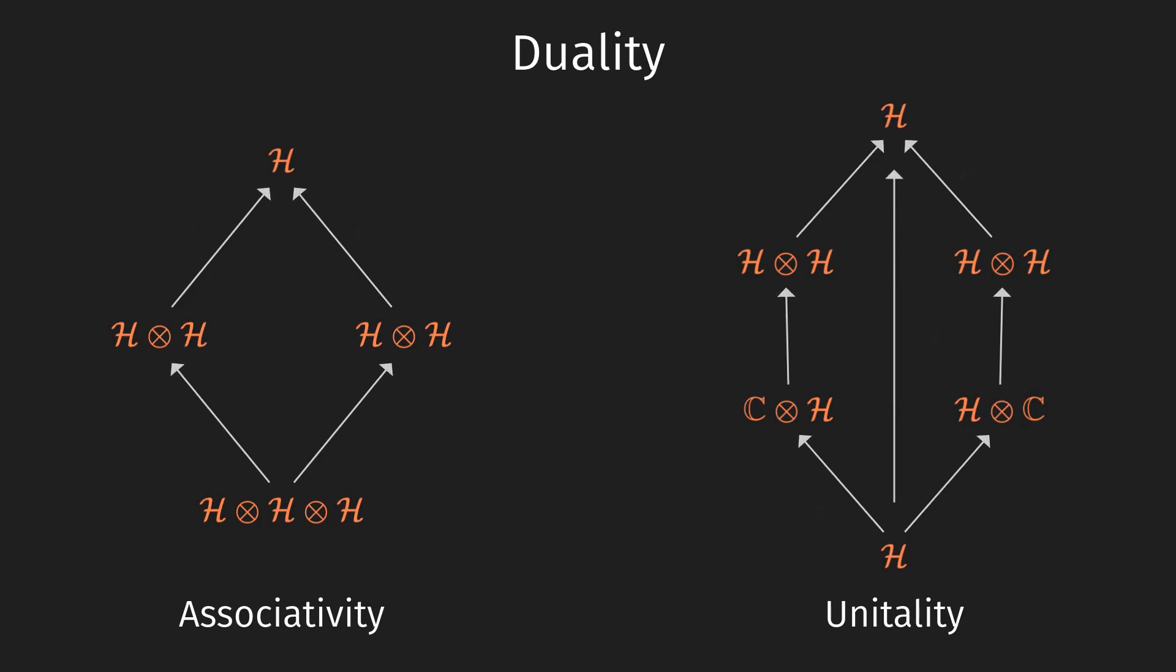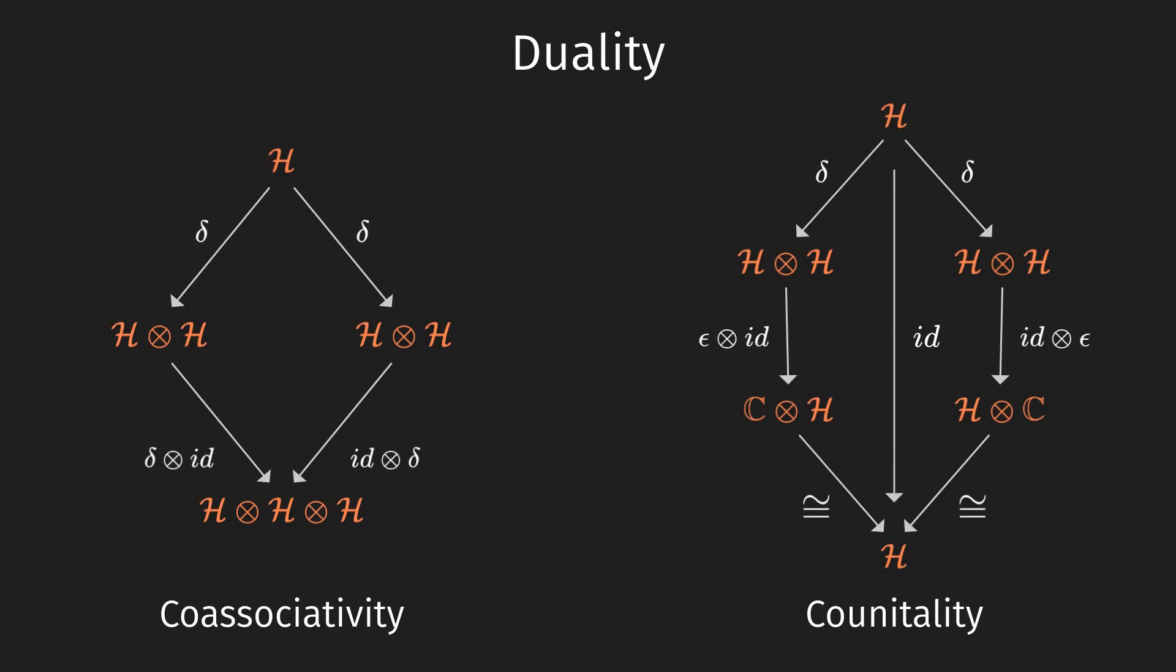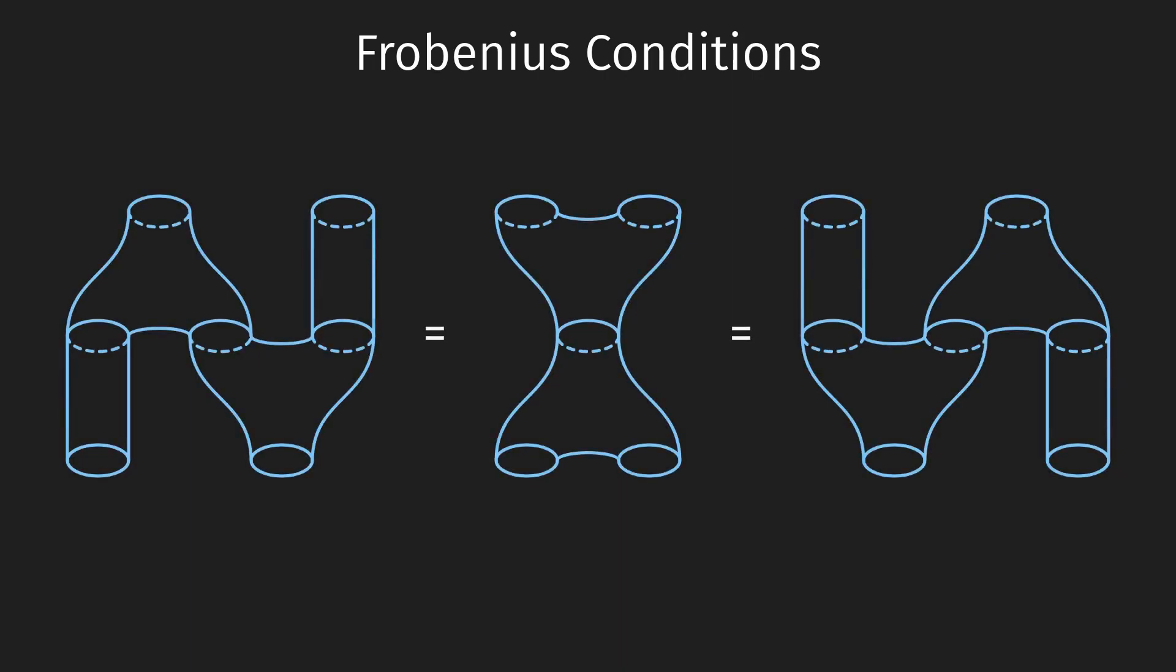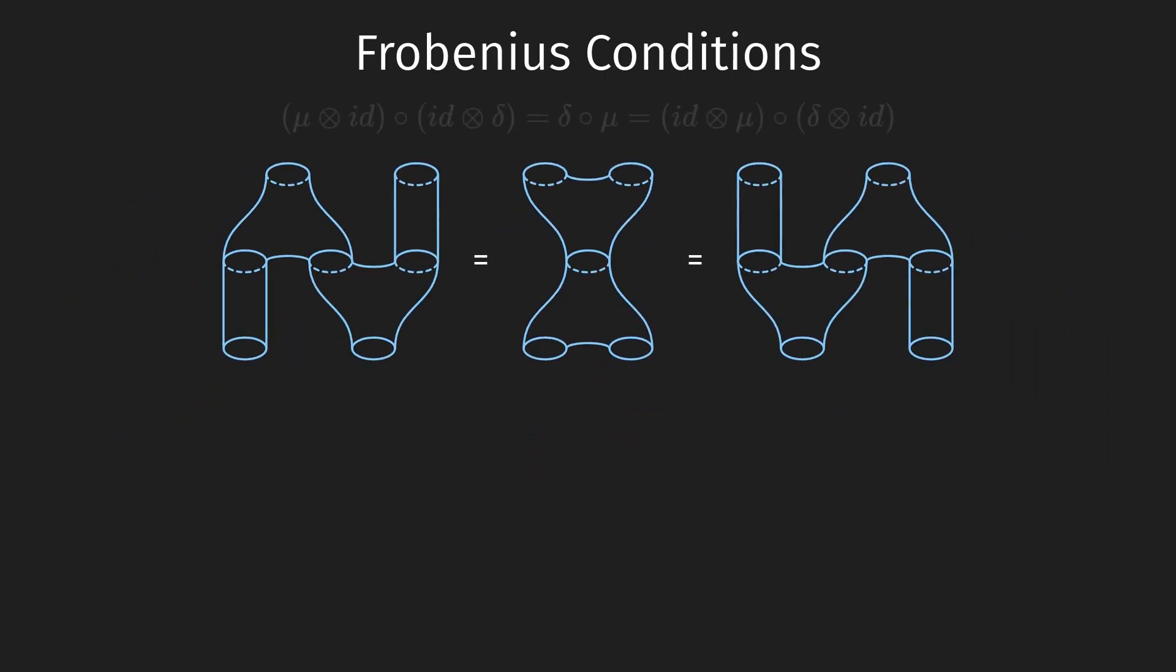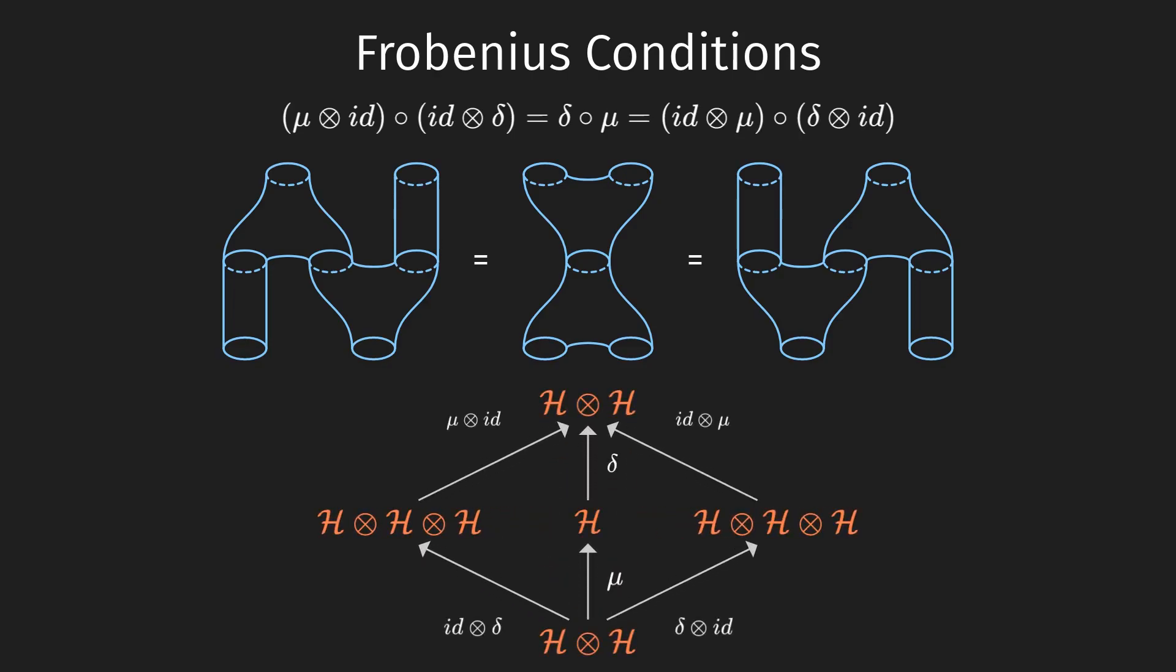The other two maps, the co-multiplication and co-unit, satisfy the same identities, except that all the maps go the other way around. This is what the co-prefix indicates. There is one final identity to consider. This is what happens when we combine multiplication with co-multiplication. We have three equivalent cobordisms. These are known as the so-called Frobenius conditions.